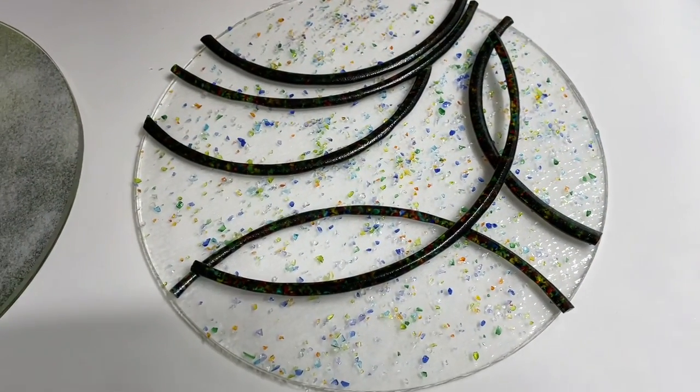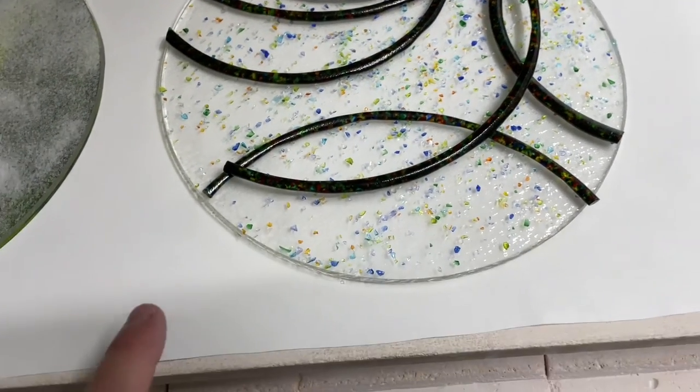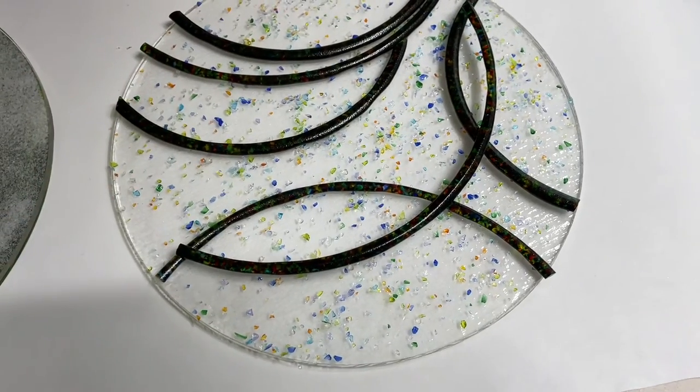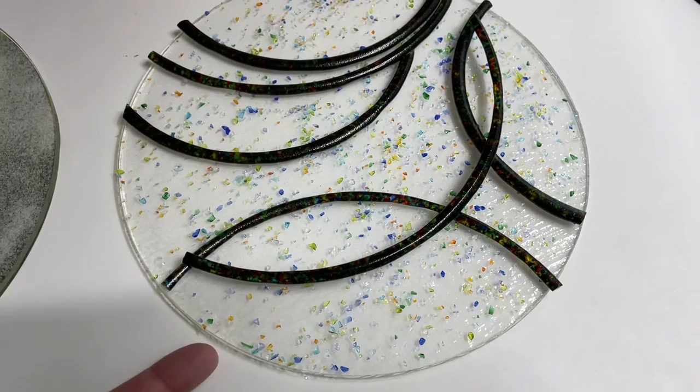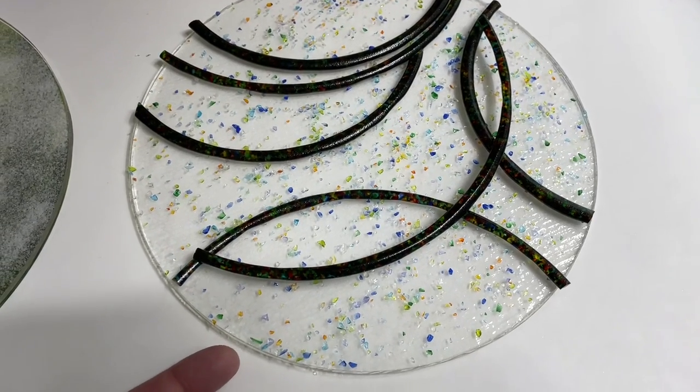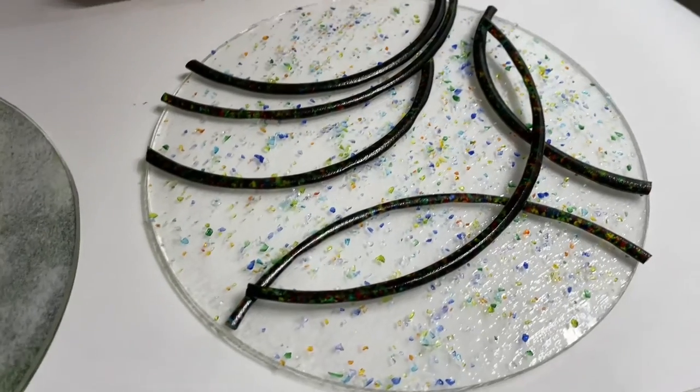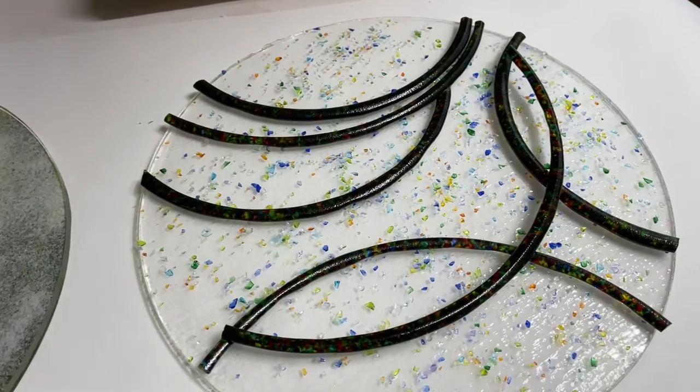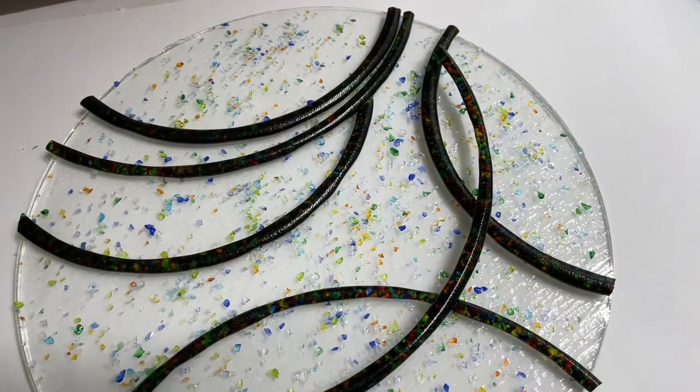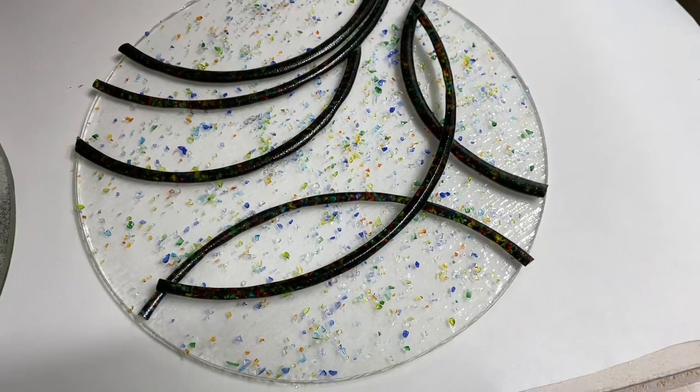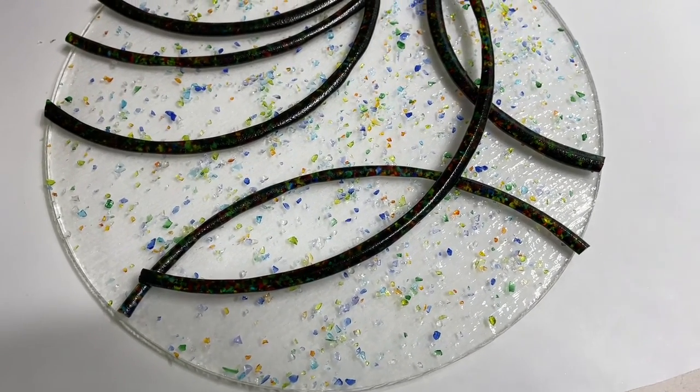All right, I told you I would tell you the layup once I had them in the kiln. This one was just an exploration. These are two layers of clear Tekta—not thin, just three millimeter clear Tekta. I put a thin layer of powder in between just for bubble control.